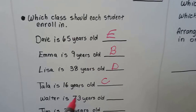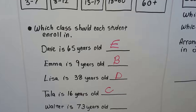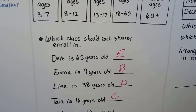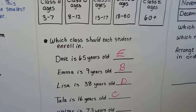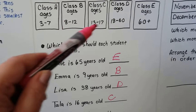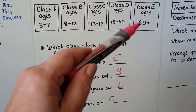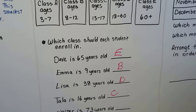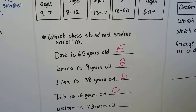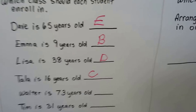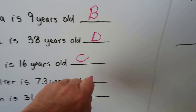Walter is 73 years old. Where would Walter be? At 73 years old he would be in the seniors group, the 60-plus, so he would be in Class E with Dave.